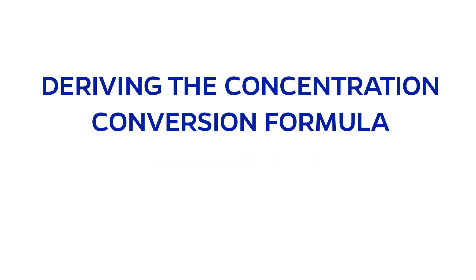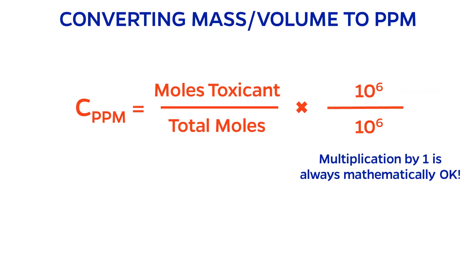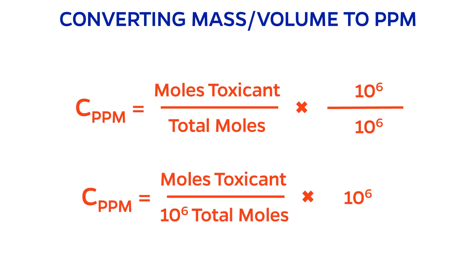Keep in mind this is only one of many possible derivations. If you take the ratio of toxicant moles and total moles, multiply by 10 to the 6 over 10 to the 6, since I'm always allowed to multiply by 1 mathematically. The denominator is now 1 million moles, and this is an expression for concentration in units of ppm.